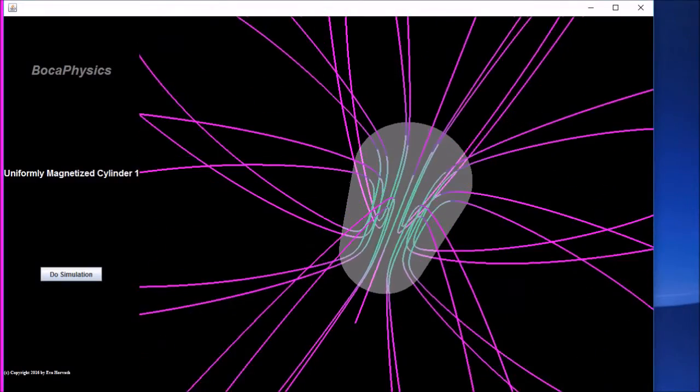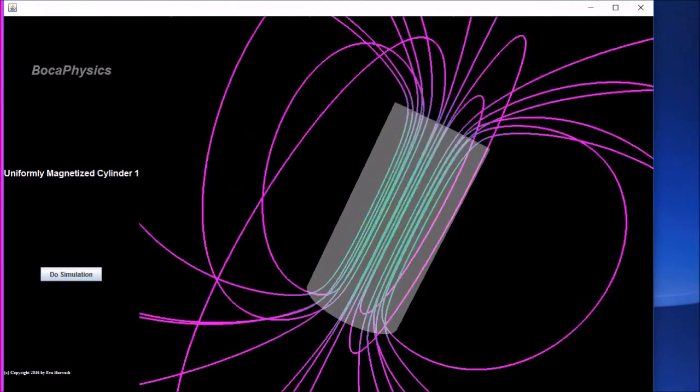Magnetic field lines form closed loops, except for the field line that lies on the axis of the cylinder.